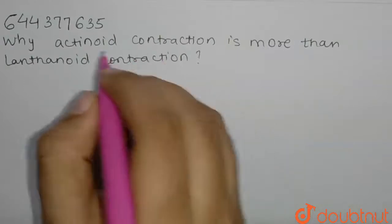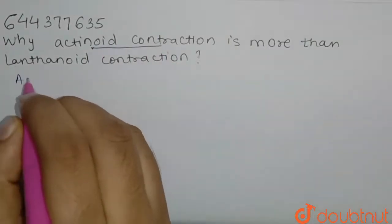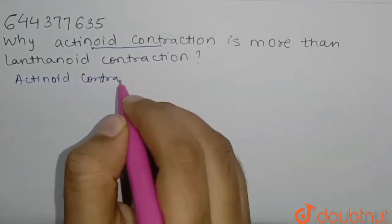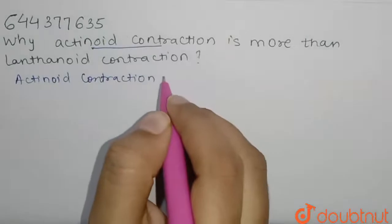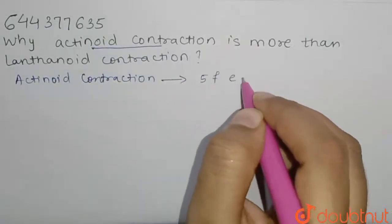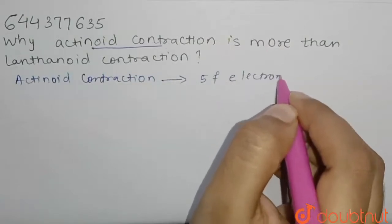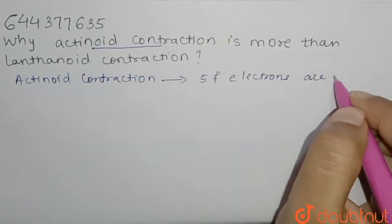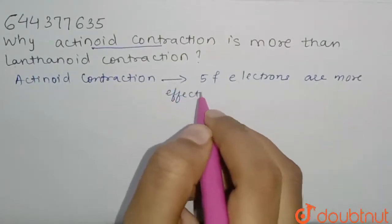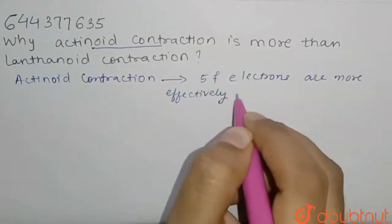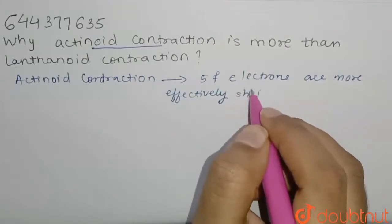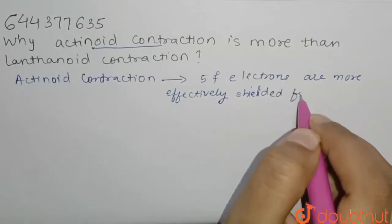see what is actinoid contraction. So in this, 5f electrons are more effectively shielded from the nuclear charge.